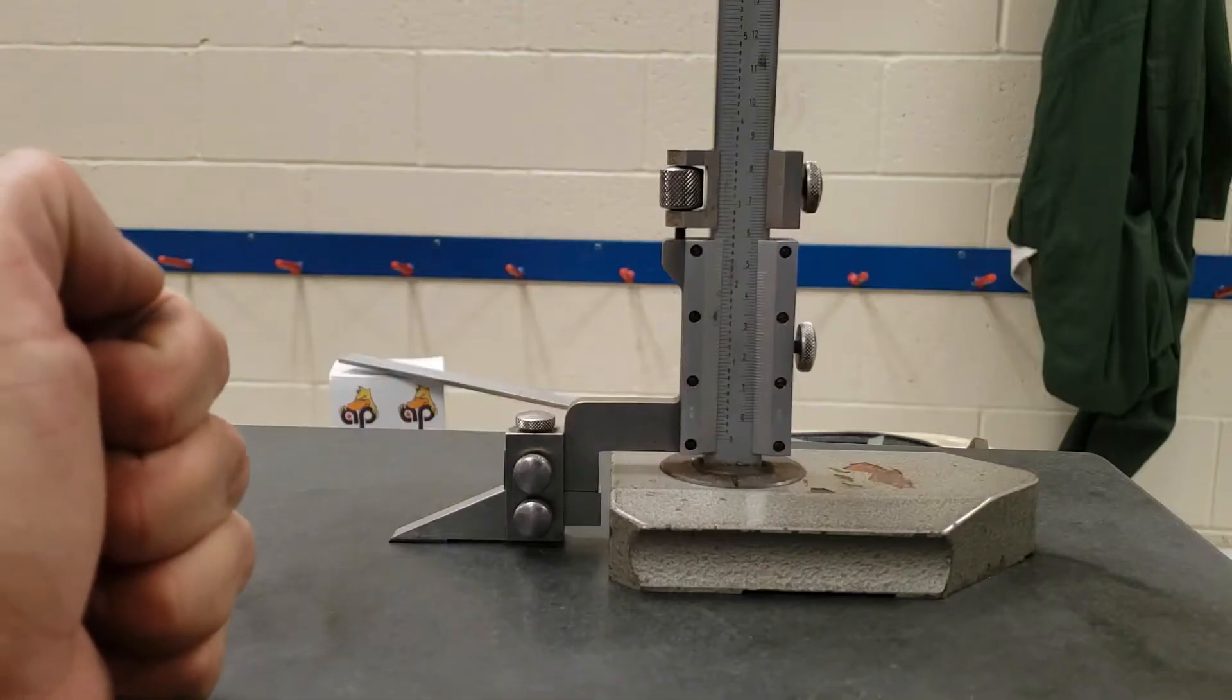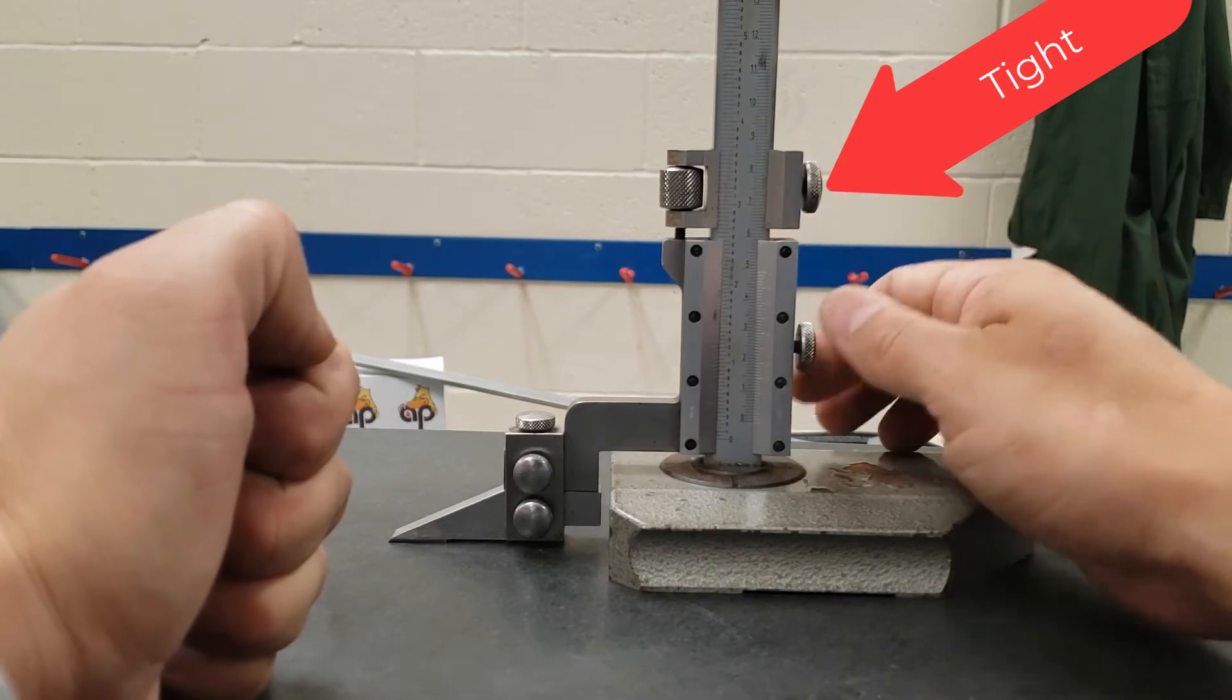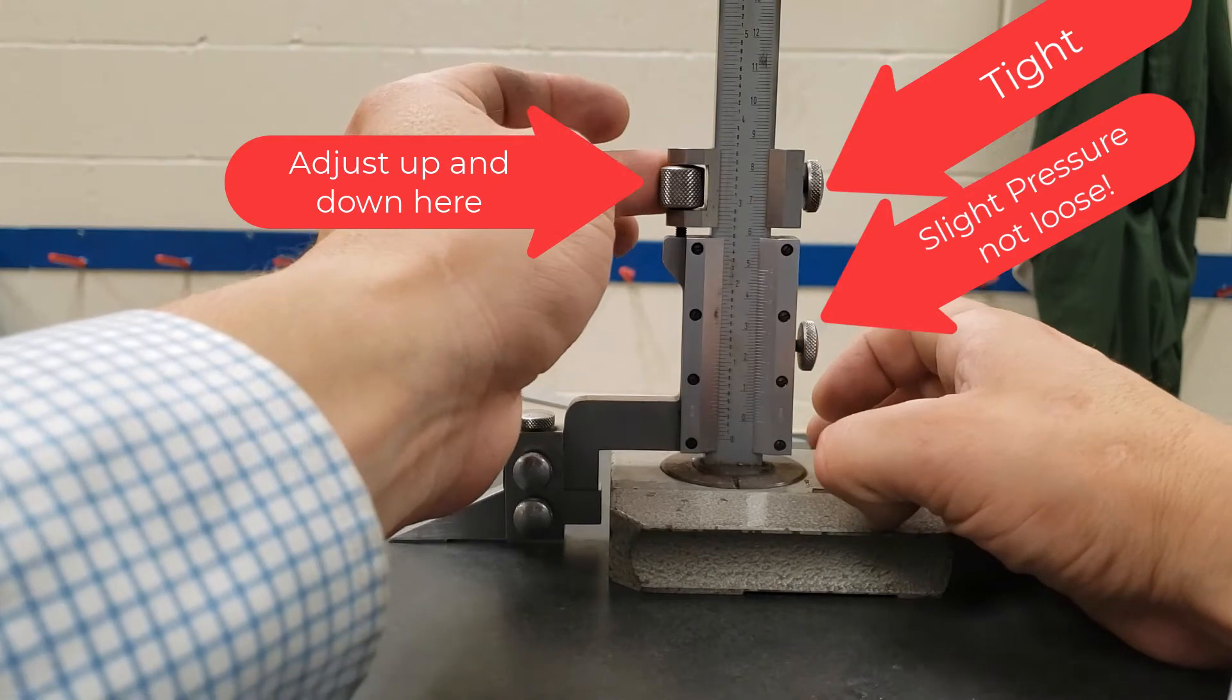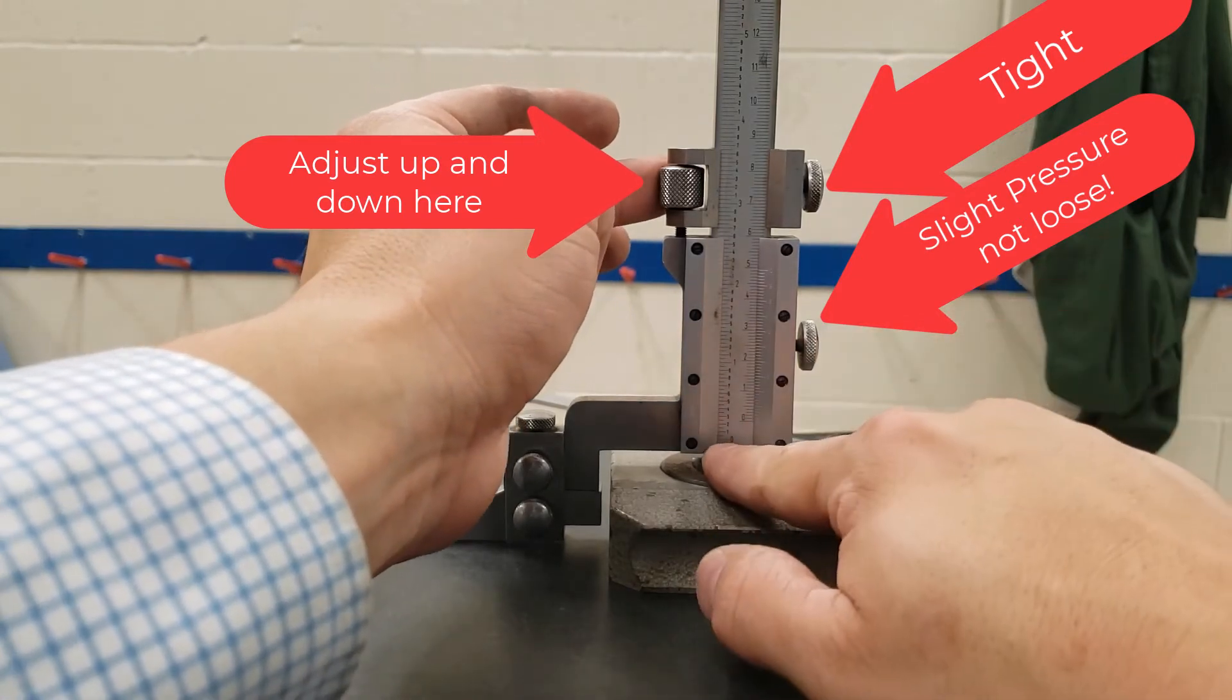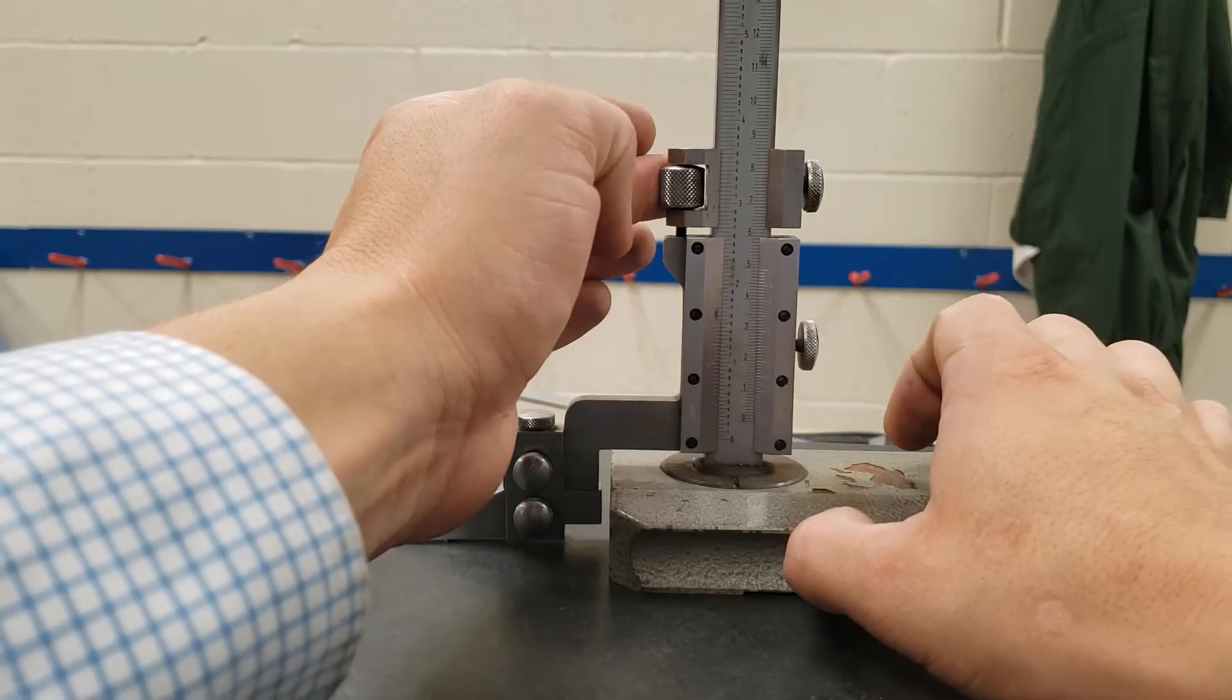To zero out the vernier height gauge first, you will lock the top lock. Then you'll make sure that the bottom lock is loosened. And you will move this fine adjust until you are at exactly zero and none of the other lines line up perfectly.